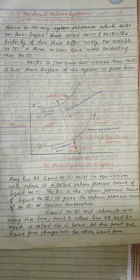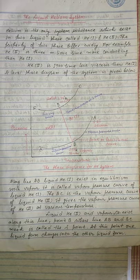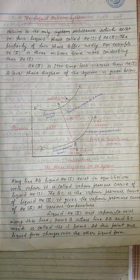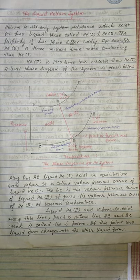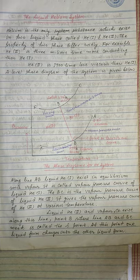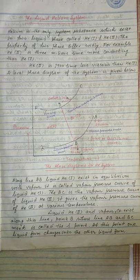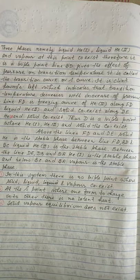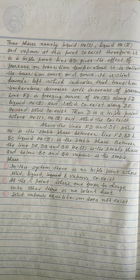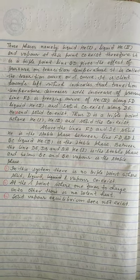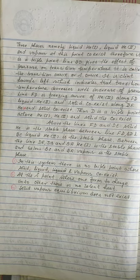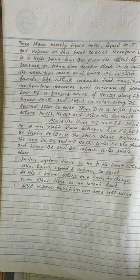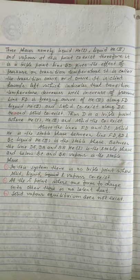Liquid helium-II and vapor co-exist along line BC. Point B, where lines AB and BC meet, is called the lambda point. At this point, one liquid form changes into the other, and three phases — liquid helium-I, liquid helium-II, and vapor — co-exist. Line BD gives the effect of pressure on the transition temperature, so it is called the transition curve or lambda curve.